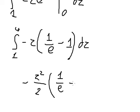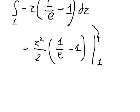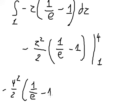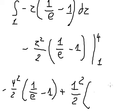We put the bounds from number one to number four. We put number four in here and number one in here, so we have negative four squared over two multiplied by one over e minus one, plus one squared over two multiplied by one over e minus one.